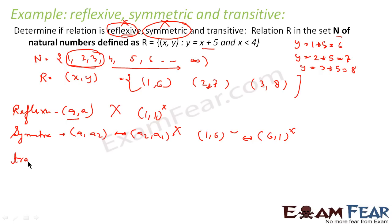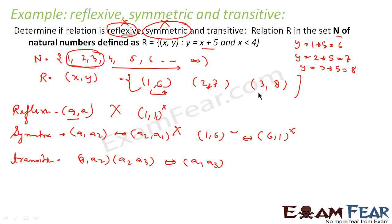The third option is transitive. For transitive, if (a1, a2) is there and (a2, a3) is there, this implies (a1, a3) should also be there. Let's take the scenario: (1,6) is there, but (6, something) does not exist in the relation at all, so we cannot even form the required pair. Therefore it is not transitive either.